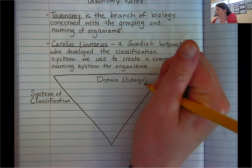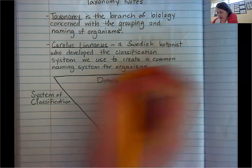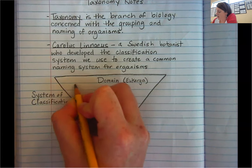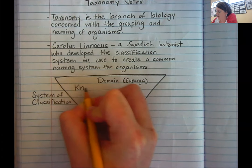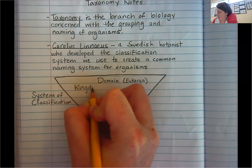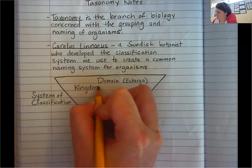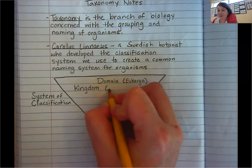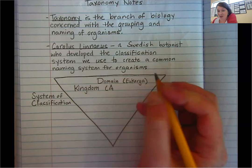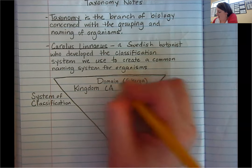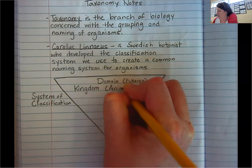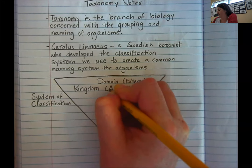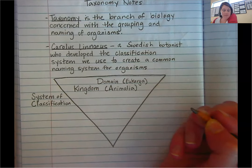Within that domain, Carolus said there are all these kingdoms of life — he came up with six. We fall into the animal kingdom, also called Animalia. You've probably heard that before. That's where we are.